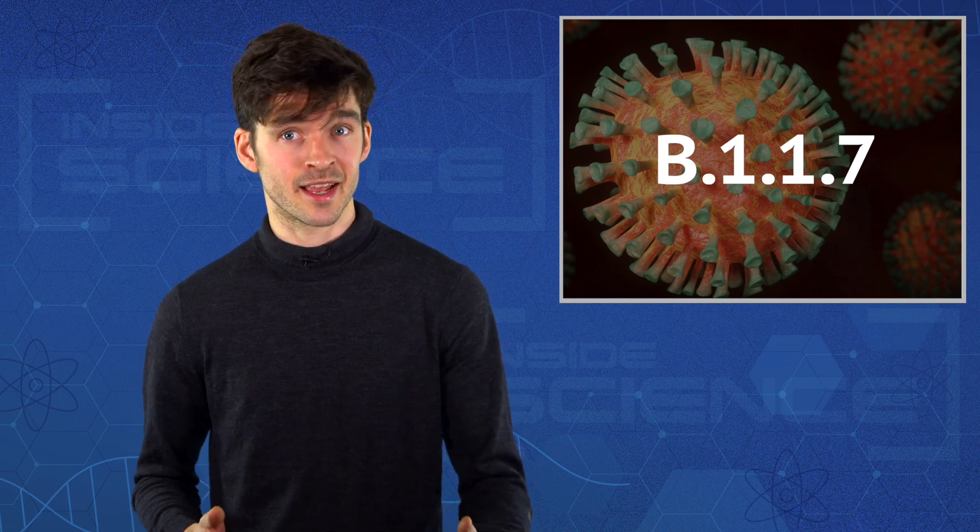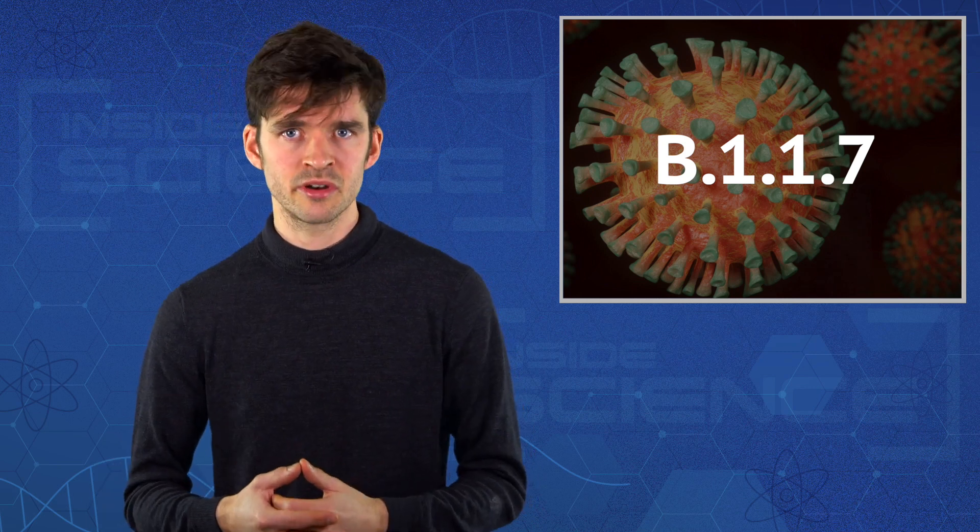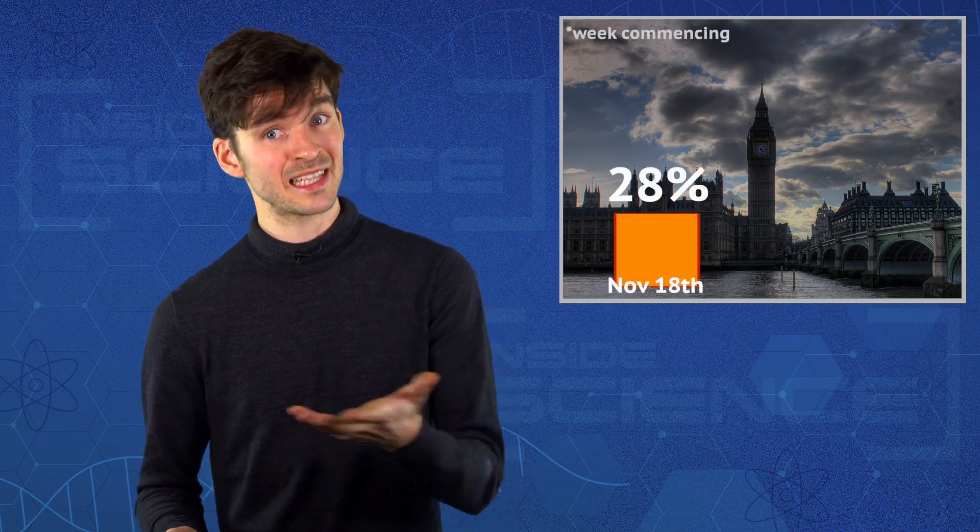The UK authorities think that because it seems to be spreading faster. On November the 18th, 28% of coronavirus infections in the capital, London, came from variant B.1.1.7. Three weeks later, that had risen to 62%.